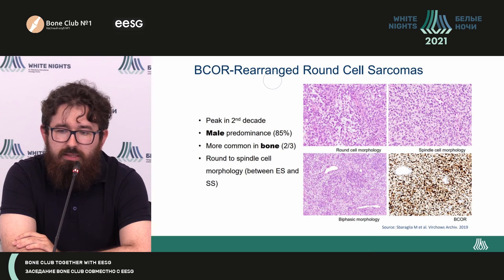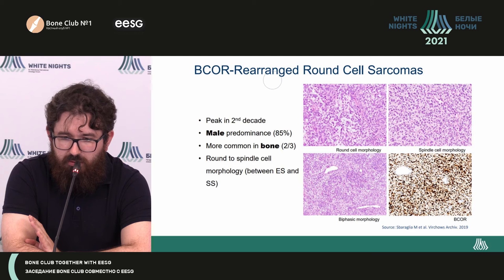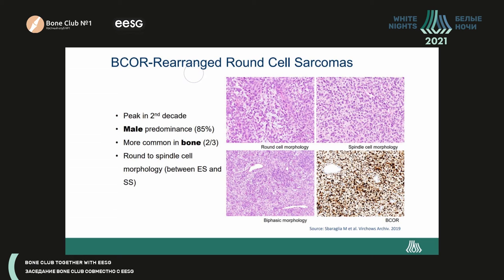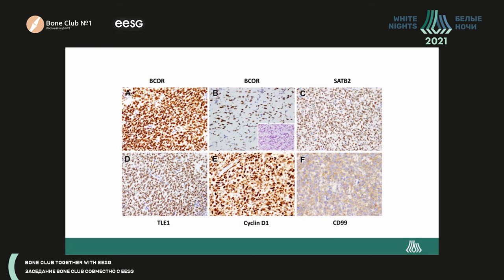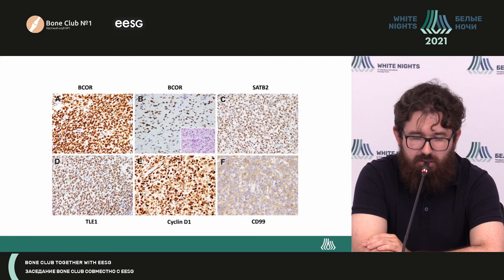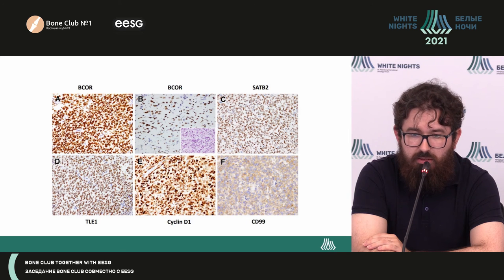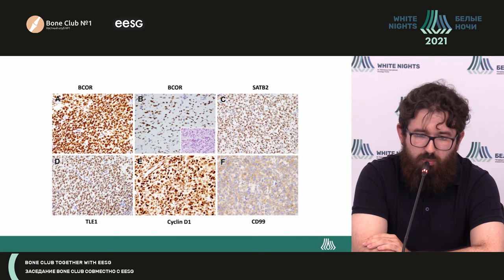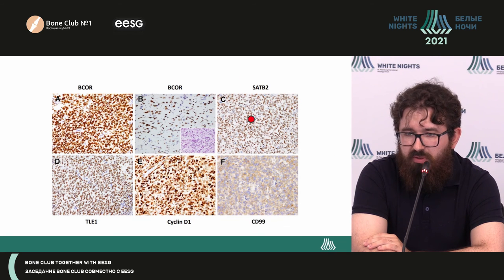There can also be a surrogate antibody specific for this type of rearrangement, which helps to detect the product of a chimeric gene. What is even more important, in these tumors we can also observe significant expression of TLE1, which makes differential diagnosis with synovial sarcoma challenging. This tumor type also has significant expression of Cyclin D1, which is typical of it but not typical of other bone sarcomas with specific rearrangements. Additionally, we can see expression of SATB2, which again reminds us of the nonspecific nature of this marker.